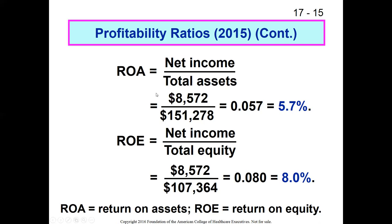It's almost never true that ROA equals ROE. It could technically be true if an organization was 100% equity financed, but in reality almost no complex organizations are purely equity financed. So in pretty much every situation except a very theoretical one, you're going to see ROA is less than ROE.